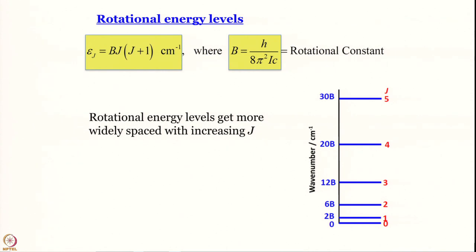Looking at ε_J = B × J(J+1): the minimum value of J is 0, so the minimum energy is 0. Compare this to the quantum harmonic oscillator, where energy could never be zero because if the oscillator is at rest, both Δx and Δp_x are zero, which violates the uncertainty principle.